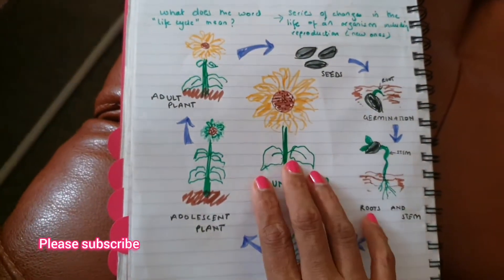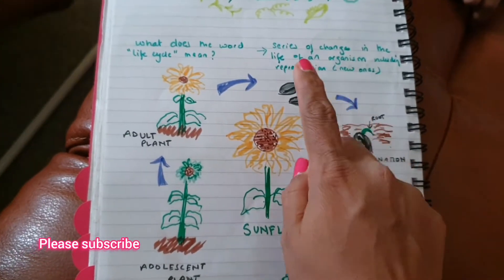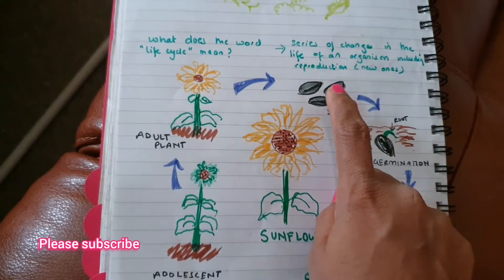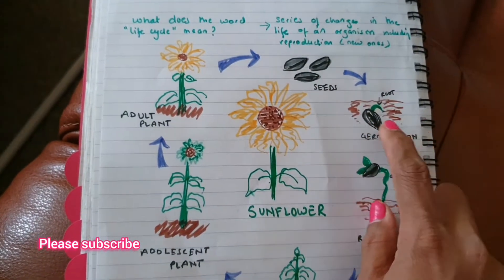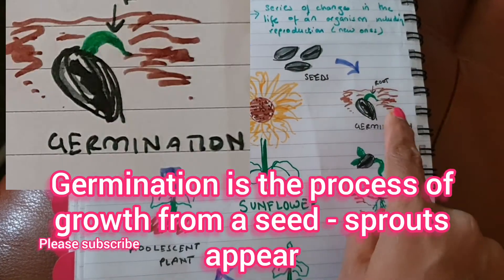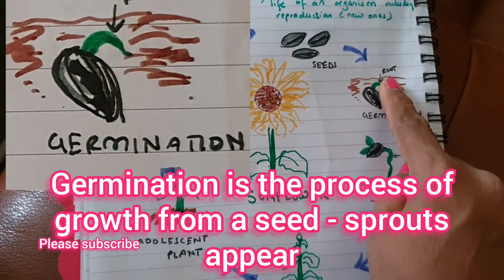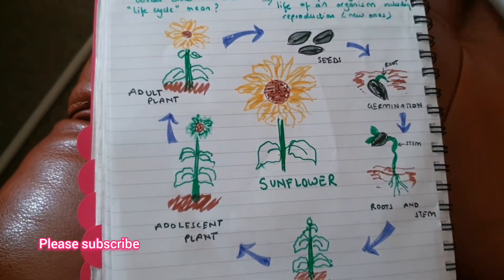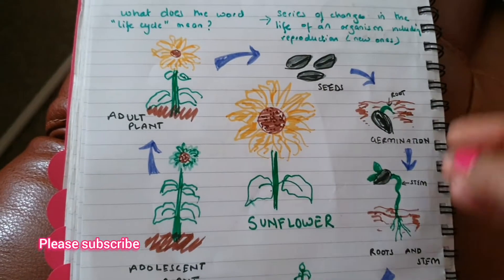For an example, we have taken sunflower over here. And as you rightly said, the cycle begins with seeds. So once we sow the seeds in the soil, they start germinating. This stage is called germination where it develops a root. And did you know Prisha, in any direction you put the seed facing up or down, the roots always go down.